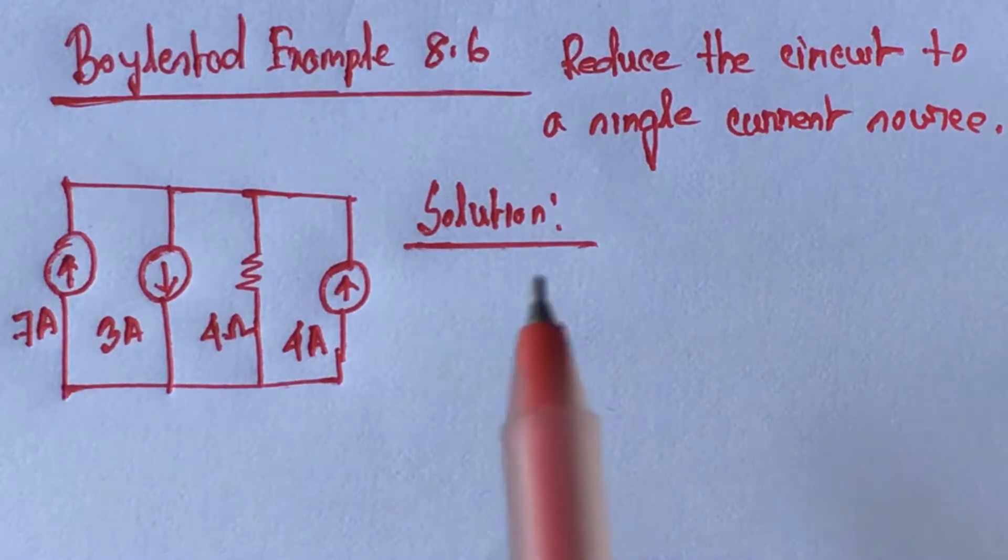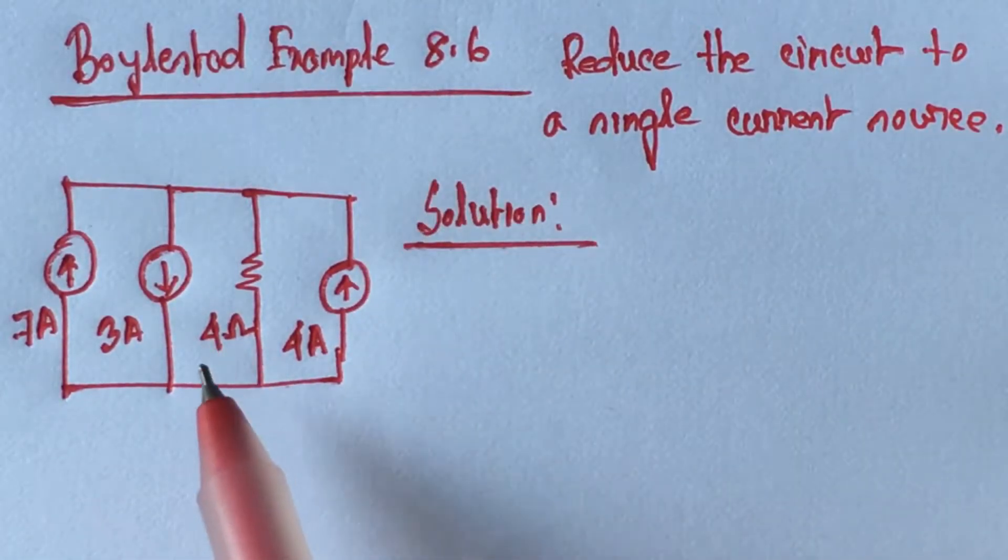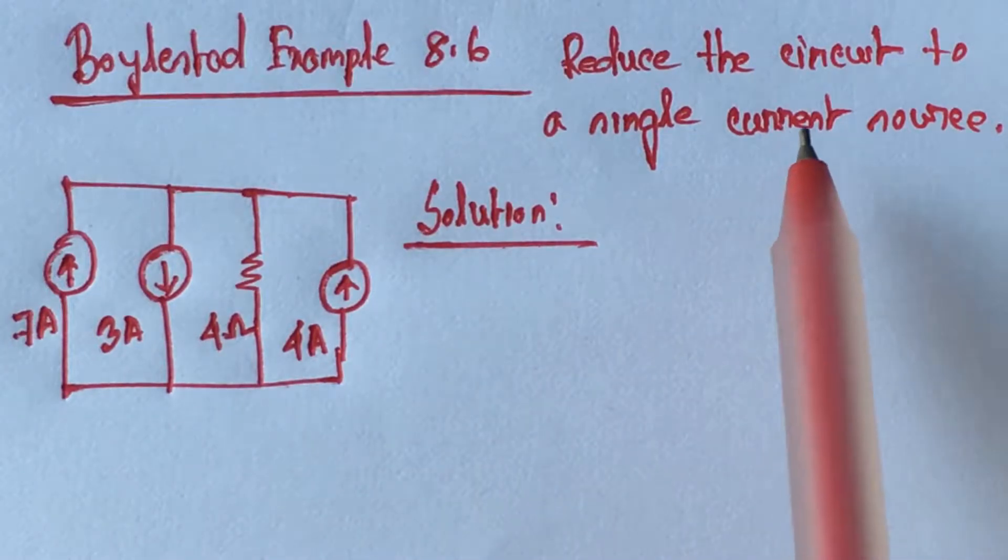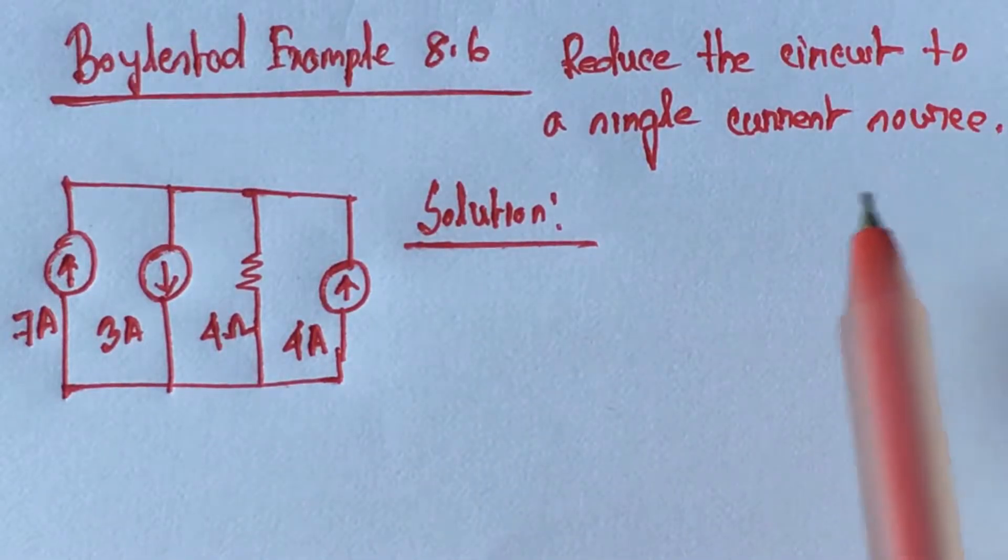Hi viewers, today we will solve example 8.6 from Boyle State. This is a multi-current source problem here we have to reduce the circuit into a single current source.